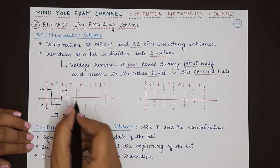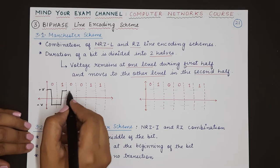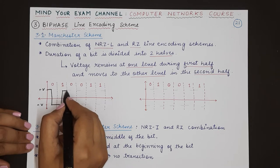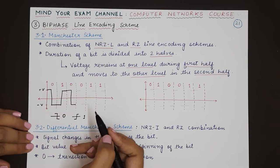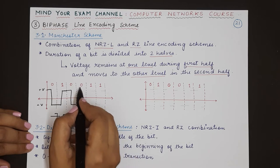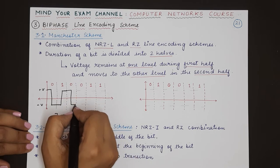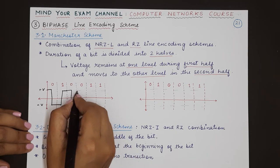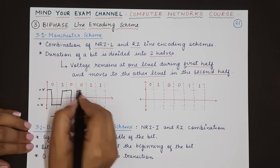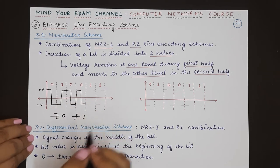For the next zero, we move from positive voltage to negative voltage. Then for the next zero again, we go from negative up to positive voltage level and then back to negative.